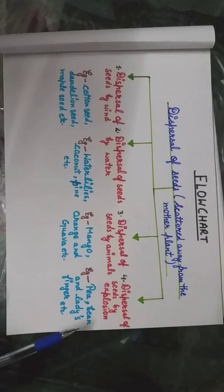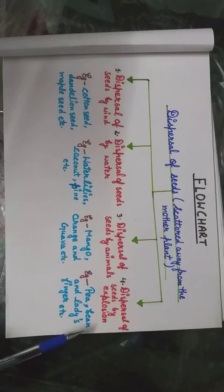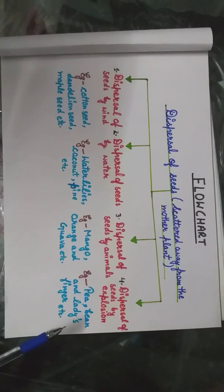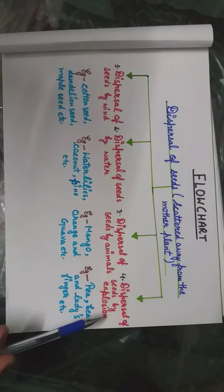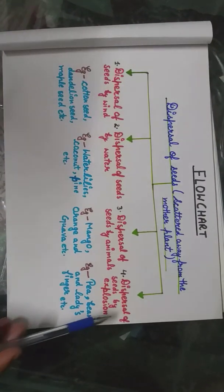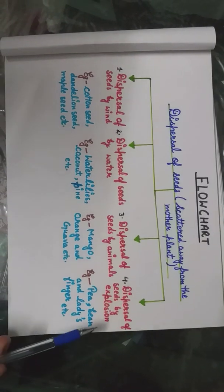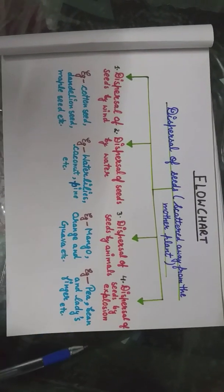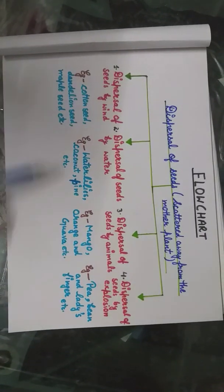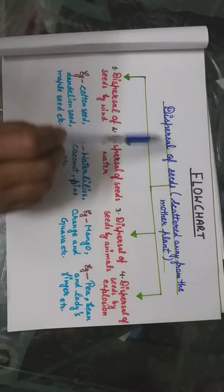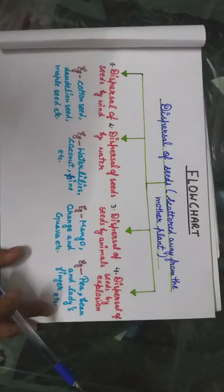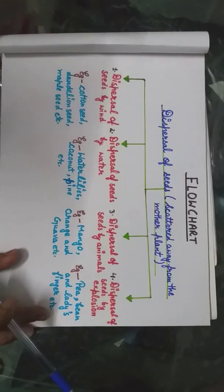Next is dispersal of seeds by explosion. Examples are pea, bean, and ladyfingers. These are the examples of the dispersal of seeds by explosion, and this completes the flow chart of the dispersal of seeds.